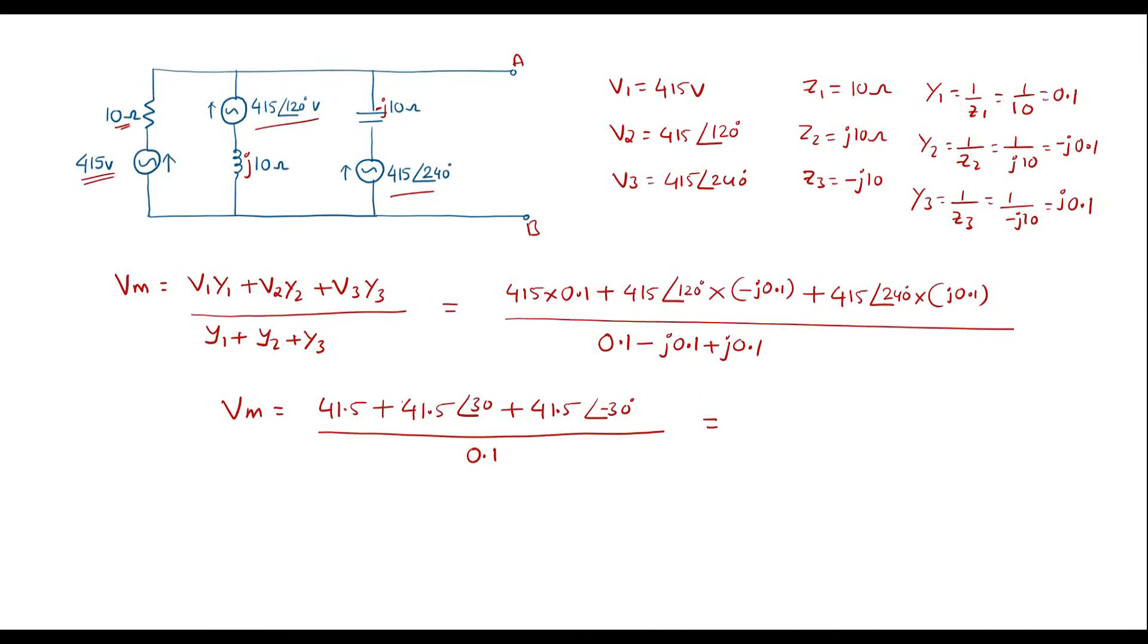Simplifying this further it gives 1133.80 at an angle of 0 that is nothing but 1133.80. Therefore, Vm is equal to 1133.80 volts.